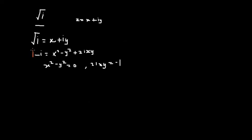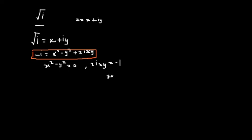We also know that 2ixy is equal to negative one. That's from this expression. So from this expression we get: x² minus y² equals zero, and 2ixy equals negative one, which gives us xy equals negative one over two.